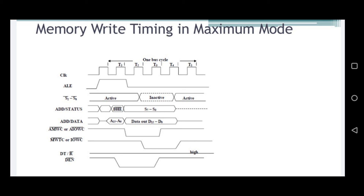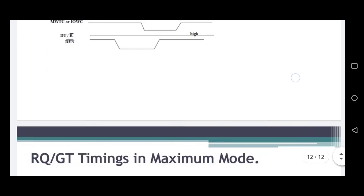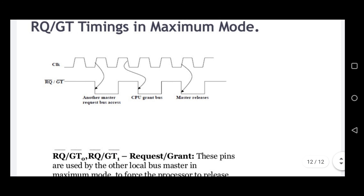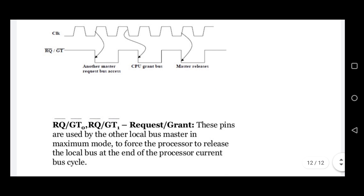Next we discuss the request/grant timings in maximum mode. In the diagram, the first graph shows the clock cycle and the second shows the request and grant signals. At the rising edge of the second clock cycle, the master requests bus access. At the falling edge of the third clock cycle, the CPU grants bus access. After one more clock cycle, the master releases the bus.